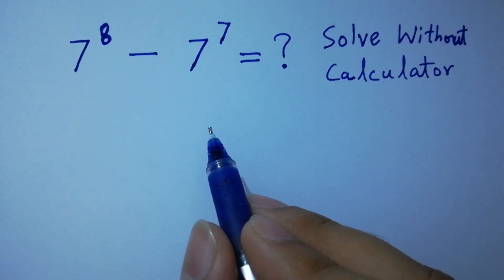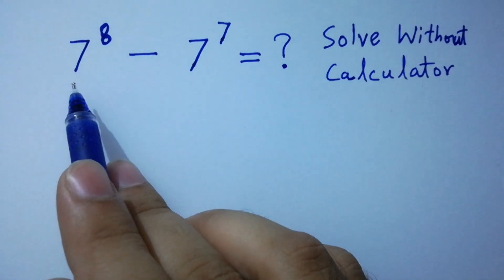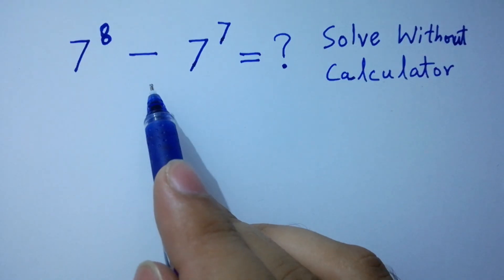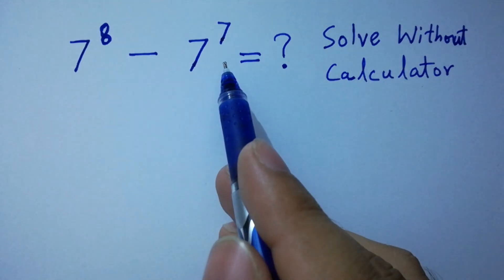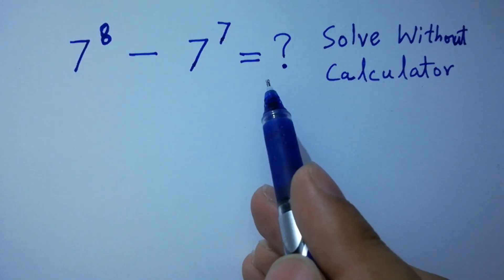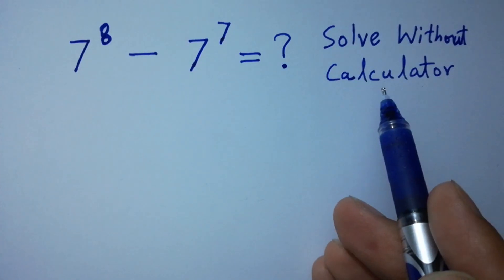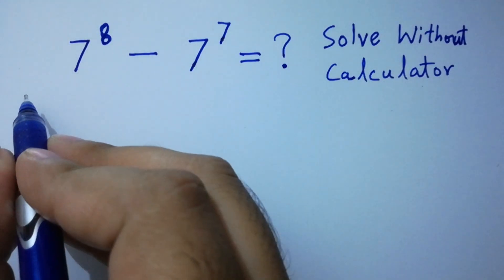Hello friends! What is 7 to the power 8 minus 7 to the power 7? Solve without calculator. Let's have a solution.